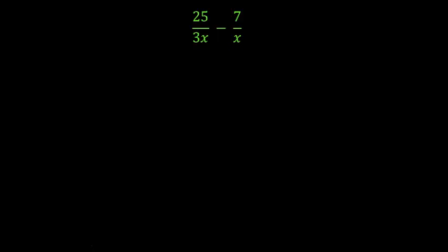Second question, I've got 25 over 3x minus 7 over x. In this case, my lowest common denominator is going to have to be 3x.